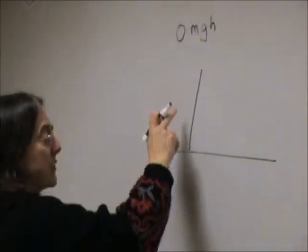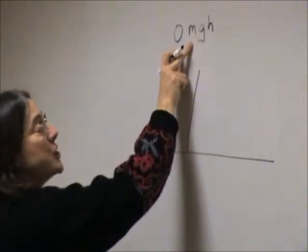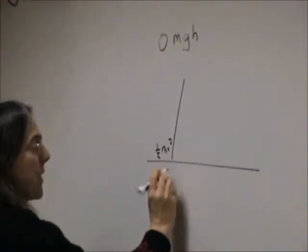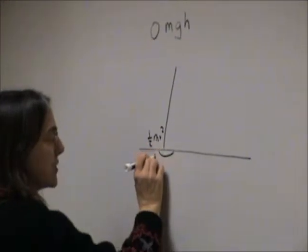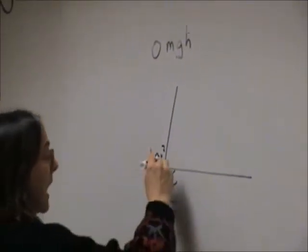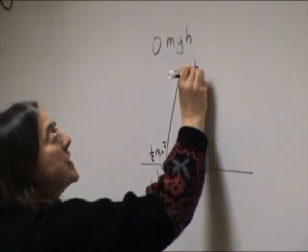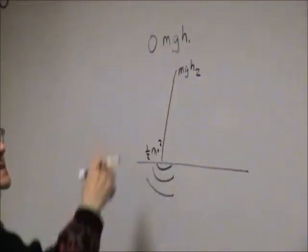So something happens to the energy. It has energy mgh here, kinetic energy, one-half mv squared here. Some amount of energy is lost as thermal energy into the tabletop. And it will bounce again to a second height, mgh2, always less than the first height.